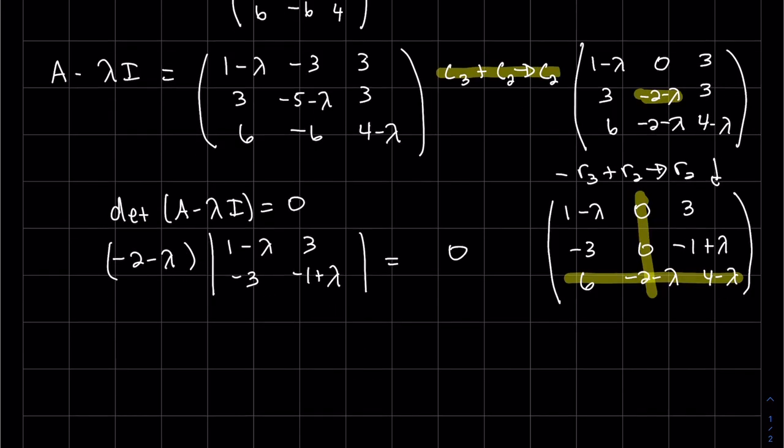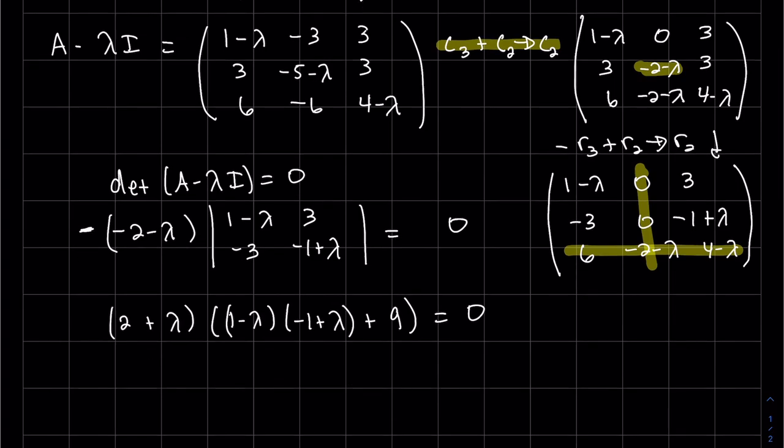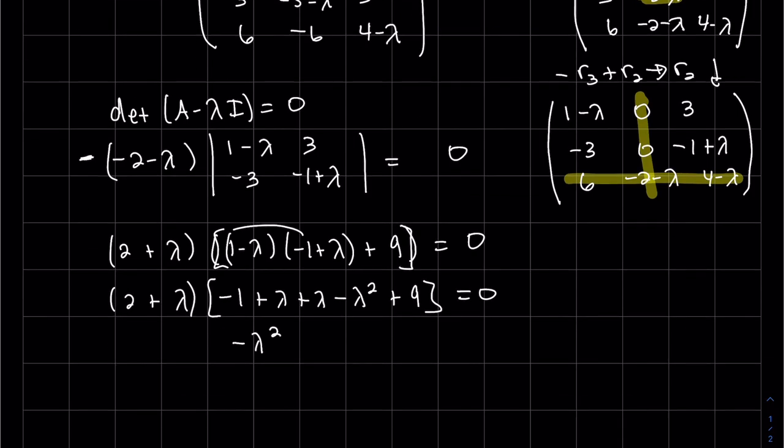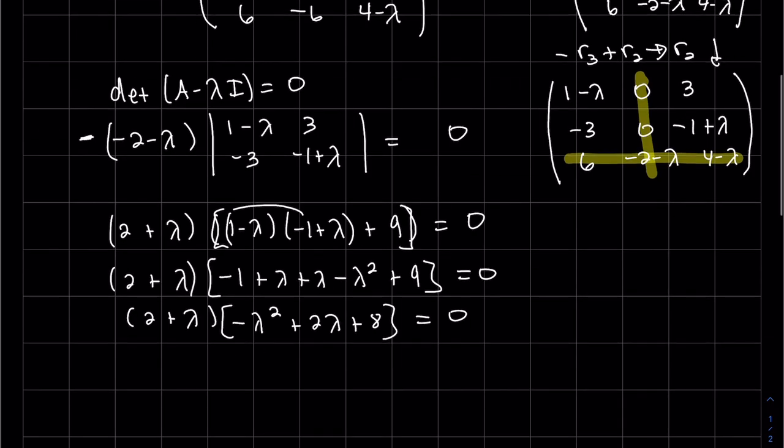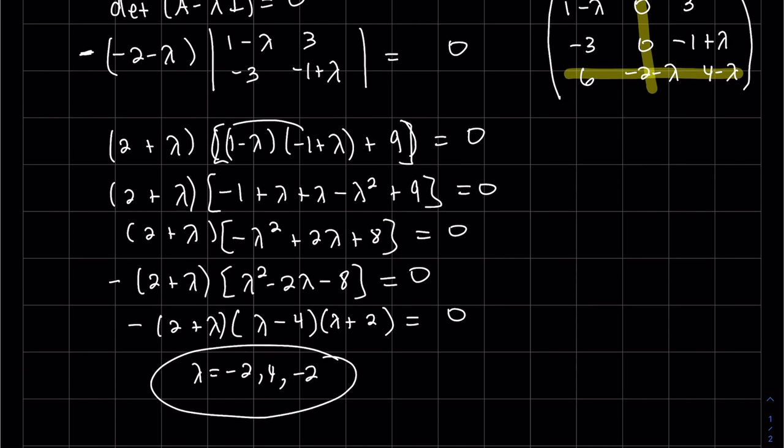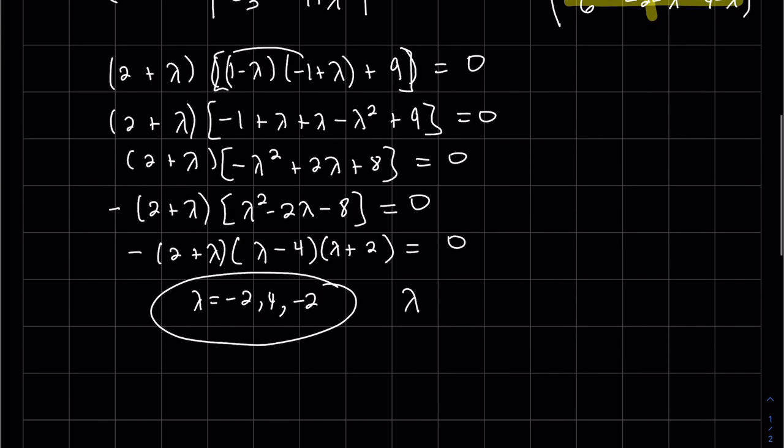And let's check our plus, minus. We do need to throw a negative in front of there. I'm going to factor out a negative there. So we have lambda is equal to four and minus two, which is multiplicity of two. Let's start with lambda is four.